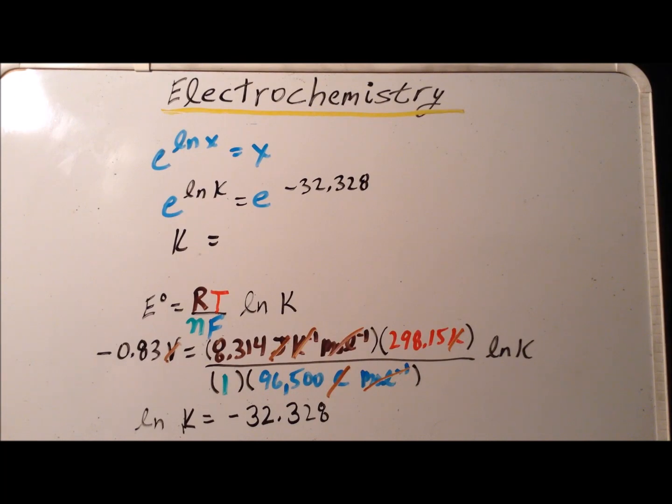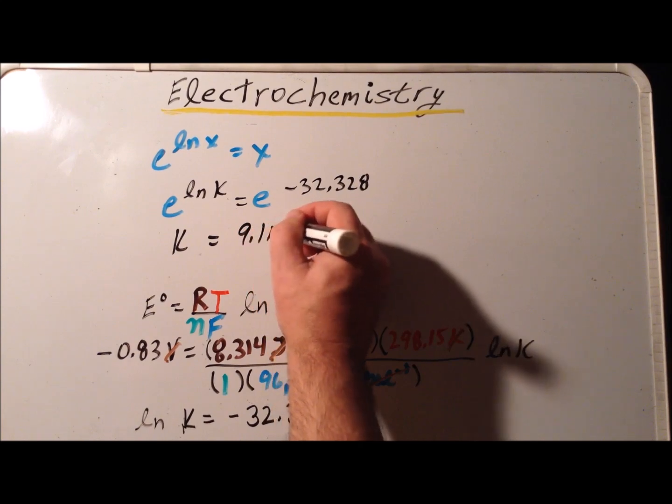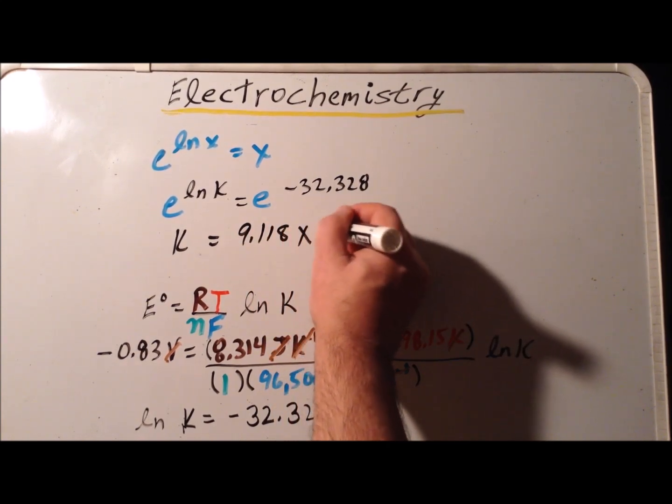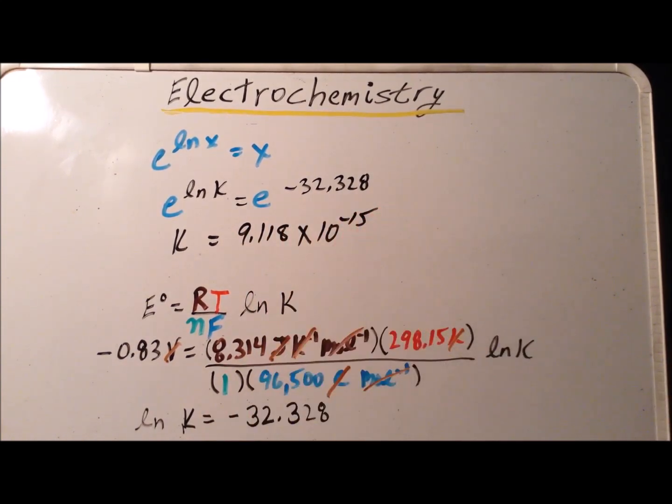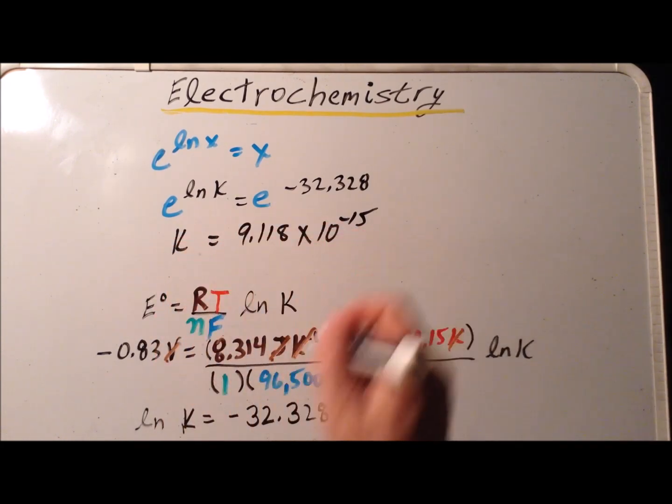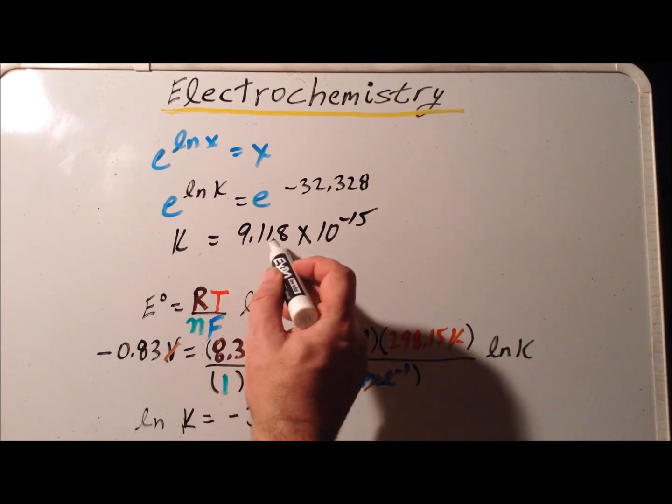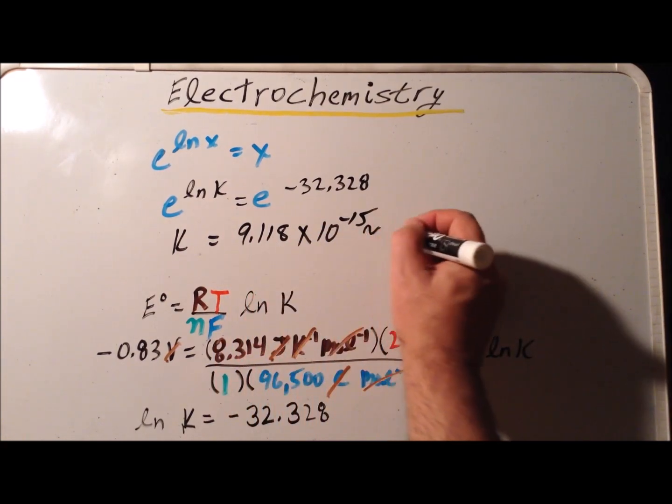And using my calculator, I get that the right hand side is going to be 9.118 times 10 to the minus 15. Now, this value doesn't look exactly like Kw, but we do notice one thing. The 9.118 is very, very close to 10.